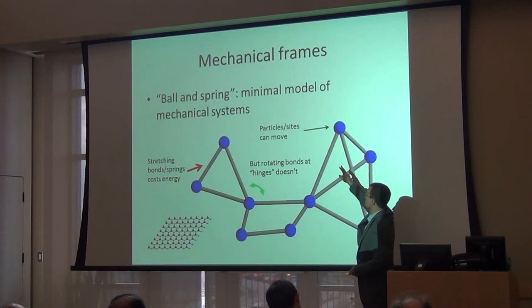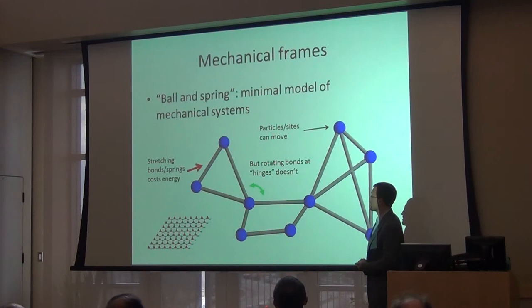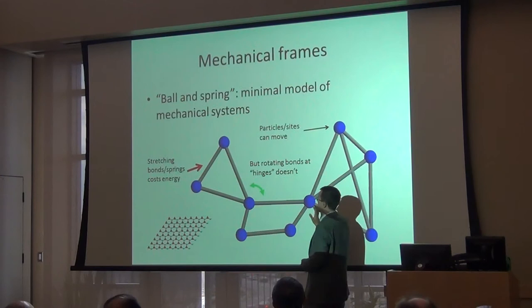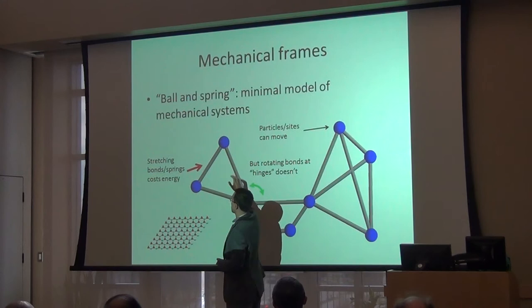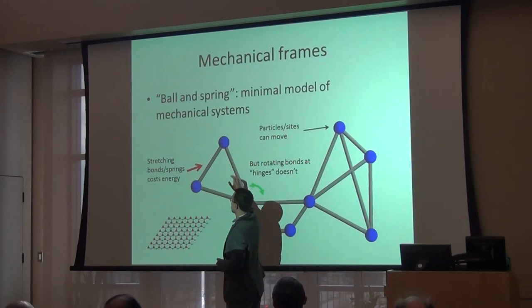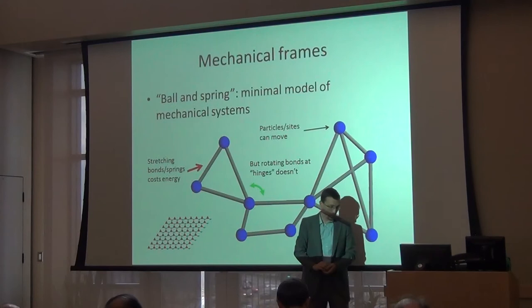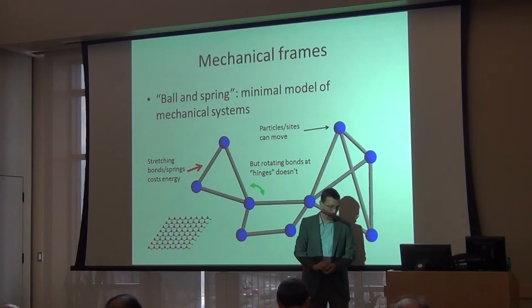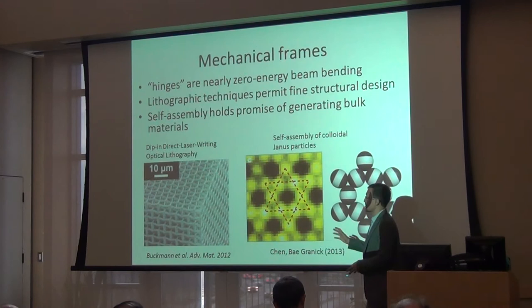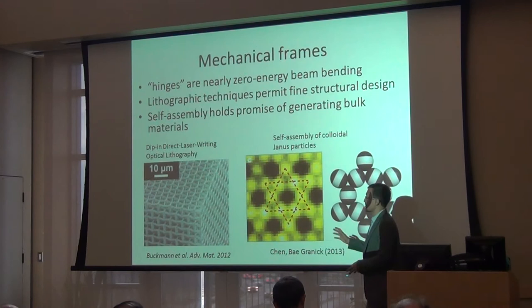We bring mechanisms and topology together in a surprisingly simple system: mechanical systems we can think of as balls connected by springs. Each site has no internal degrees of freedom — all it can do is move left, right, up, down, and in 3D forward and back. The bonds are simple springs: compressing or extending them costs energy, but there's no energy cost to rotating bonds about a site without stretching them. What we're really envisioning is something experimentally realizable today at smaller scales. If beams are thin enough relative to their length, hinging them costs very little energy compared to compressing them, and there are lithographic techniques giving us these systems down to 10 microns.